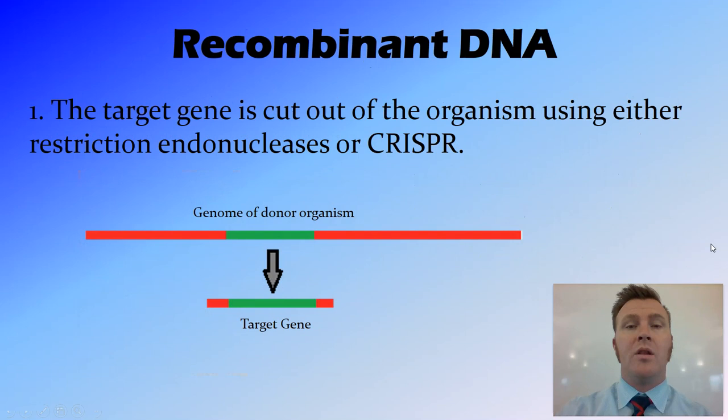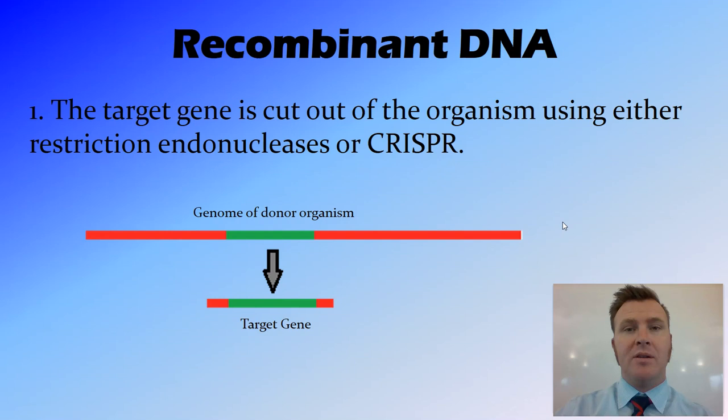The process by which scientists create transgenic organisms is through the use of recombinant DNA. This is the same or a very similar process to that used in gene cloning in plasmids, so check that video out for more detail on how the cutting occurs. Basically, in a simplified explanation, you get the genome of the donor organism — the one that has the gene you want — and you identify where that target gene is, then use restriction endonucleases or CRISPR-Cas9 to cut that target gene out of the genome.